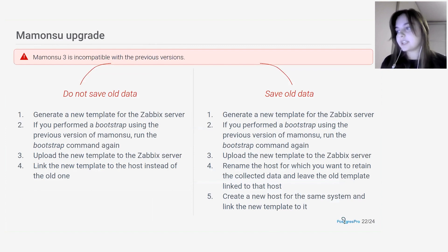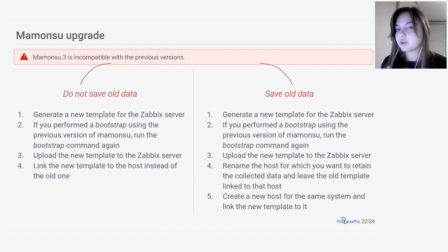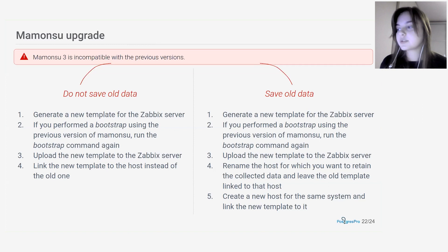We will also cover the topic of upgrading Mamoncel. The difficulty is that a major update means loss of old data — no data after the update will be available with visualization in the Zabbix database. So we have two options: do not save old data, or save it. In the first case, the algorithm is simple: delete the old template, generate a new one, upload it to the Zabbix server, and link it to the hosts. If you need to save data with the ability to visualize it quickly, we recommend leaving the link to the old template on your hosts, duplicating the hosts, generating a new Mamoncel template, and linking it to the copies. You will then have two sets of Zabbix hosts: inactive hosts with old Mamoncel data that can be visualized at any time, and active hosts with the new Mamoncel template.